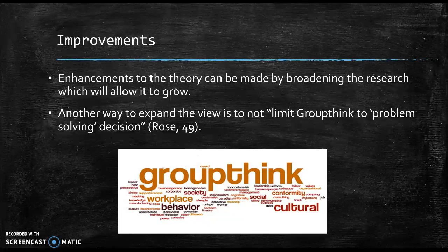Enhancements to the theory can be made by broadening the research, which will allow it to grow. More studies executed on less intense decision-making groups would assist in creating a larger scope. Another way to broaden the view is to not limit groupthink to problem-solving decisions. Additionally, stating that the theory has an intentionally limited scope will clear up any misunderstandings that might arise. Changing some of the core concepts in order to track the progress of logic would also be able to address the issue of testability.